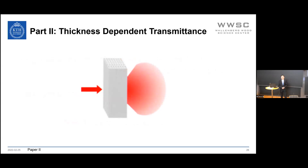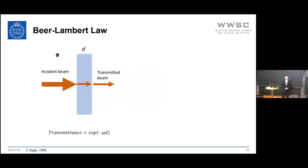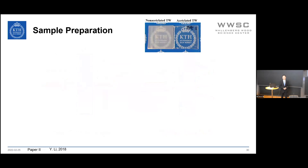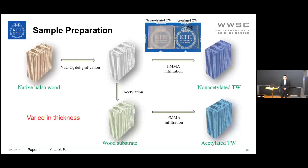Previously, many reports presented transmittance data based on a single sample thickness, or described the total transmittance–thickness relationship using Beer–Lambert (BLM) law approximately. However, for scattering materials such as transparent wood, the optical path length of photons is longer than the sample thickness, making BLM law inapplicable. To address this, we prepared several types of samples. Acetylated transparent wood was found to show better optical performance compared with non-acetylated transparent wood. The non-acetylated version is prepared from delignified wood substrate infiltrated with PMMA, and the acetylated version from an acetylated wood substrate infiltrated with PMMA.